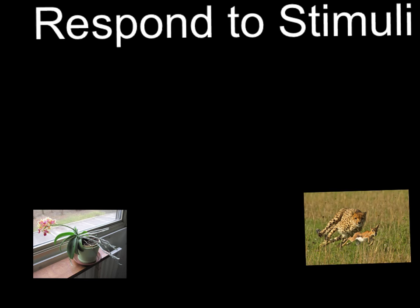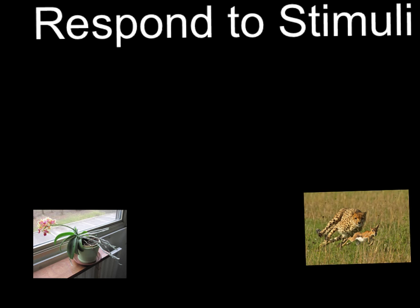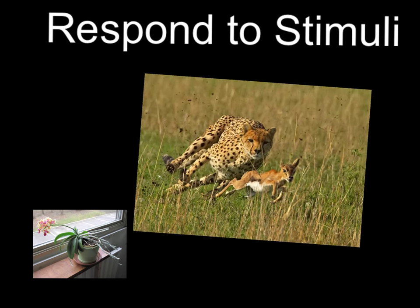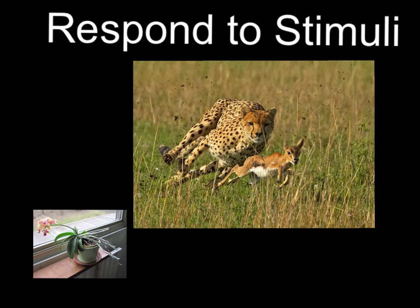The first one for us to talk about is that all living things respond to stimuli from their environment. Some of these examples are really easy to see. For example, if we have a cheetah chasing a gazelle, as you would see in this picture, it's obvious to see how that gazelle is responding to its environment — it's running away from the cheetah. It's very clearly responding to some type of stimuli, to some type of predation.